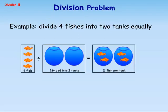Division Problem. Example: divide four fishes into two tanks equally. Four fish when divided into two tanks equals two fish in each tank.